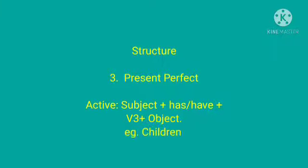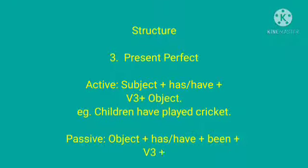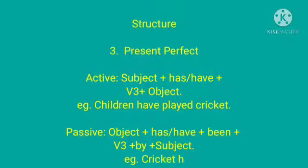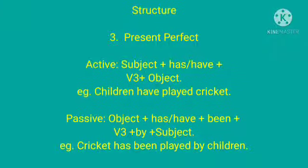The structure of present perfect tense in active voice is subject plus has or have plus past participle plus object. Example is children have played cricket, and this changes into passive voice as cricket has been played by children.